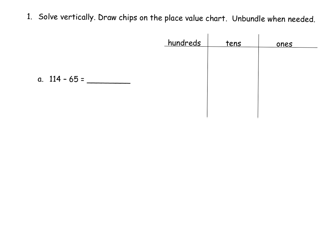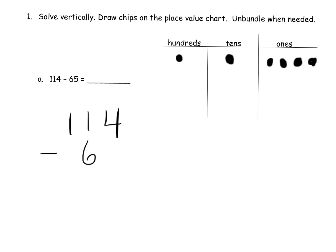I'm going to model it first with our number disks. We're going to start with modeling 114 in our place value chart. So that means we're going to have 100, 110, and four ones. There's 114, and now we're supposed to subtract 65. I'm going to write that down right here — 114 minus 65.